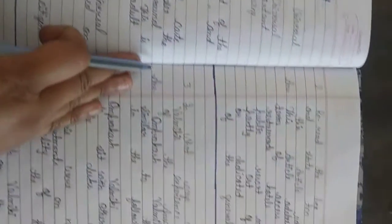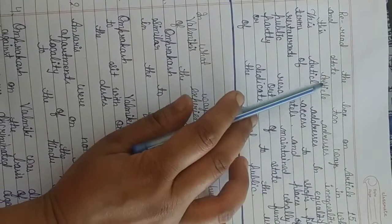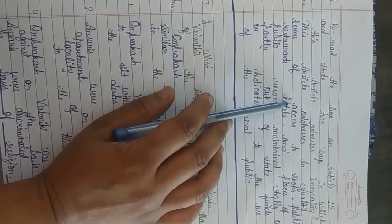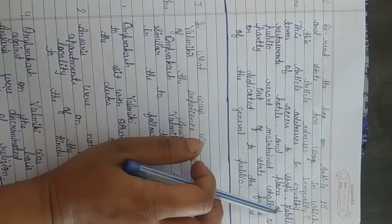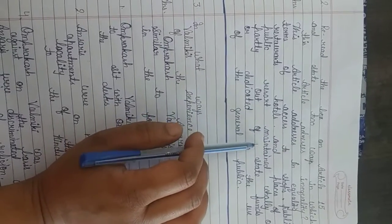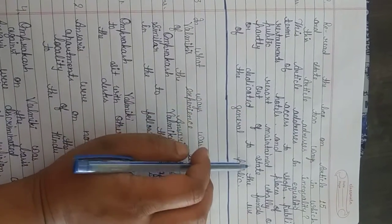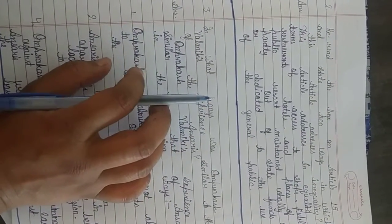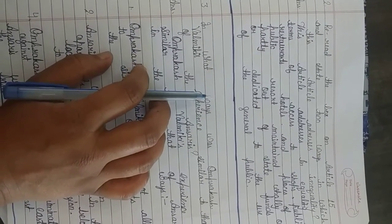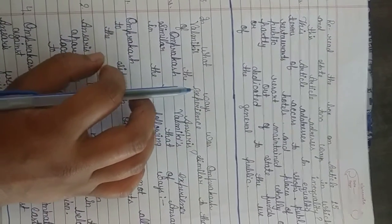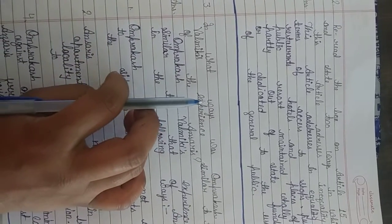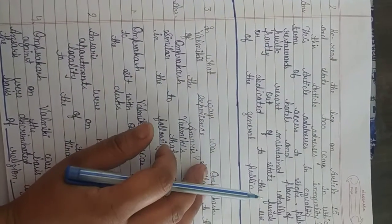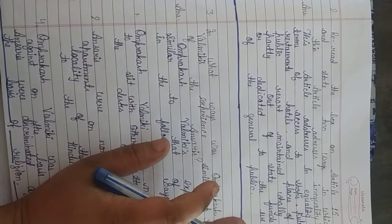Now second question: read the box on article 15 and state two ways in which this article addresses inequality. This article addresses inequality in terms of access to shops, public restaurants, hotels and places of public entertainment maintained out of state funds or dedicated to the use of the general public. According to article 15, untouchability is abolished, it is illegal, it is a crime.